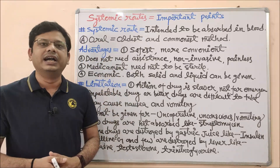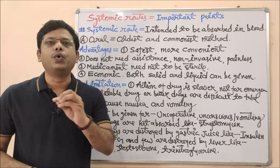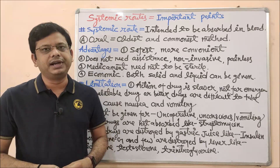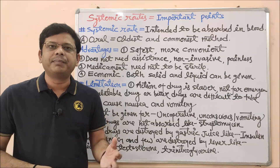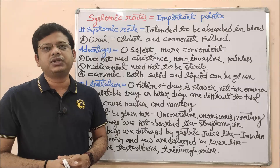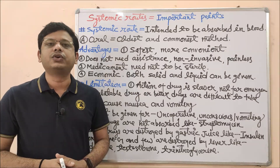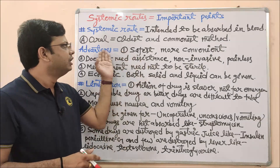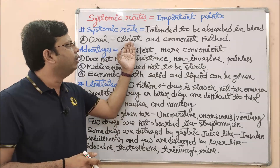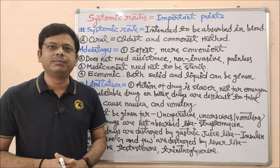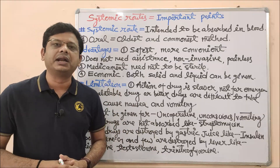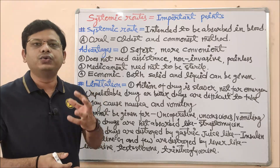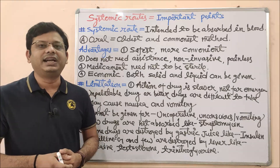Now let's start the first example under the systemic route: the oral route of drug administration. We have taken so many tablets — it may be a chewable tablet, an analgesic drug, an antipyretic drug, or any other kind. Most drugs are meant for oral administration because it is one of the oldest and most common methods for introducing any drug for its desirable activity, as it is easy and has many advantages.